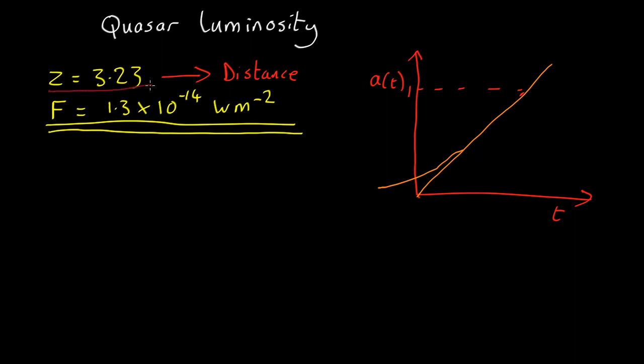We know that this redshift, 3.23, corresponds to a scale factor a equals 1 over 1 plus z, which comes out as about 0.23. So that means the light that we're seeing set out here at 0.23. And so this is the time the light has been traveling to reach us, multiplied by the speed of light, and you get a distance.